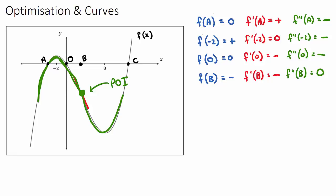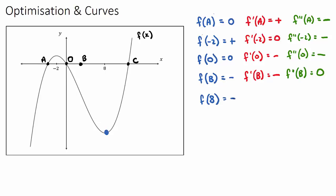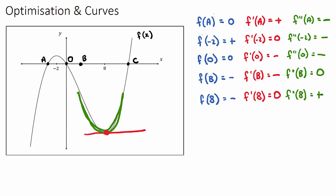f(8): when x is 8, the y-value will be negative. f'(8): what is the slope here? Well, it's a turning point — it's a minimum — so the slope will be equal to 0. And f''(8) will be our concavity. This point here is part of the happy face, so it's going to have a positive concavity.